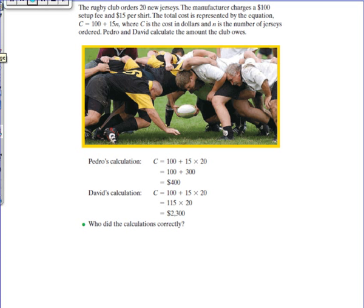Here's an example of why we need order of operations in math. The rugby club orders 20 new jerseys. The manufacturer charges a $100 setup fee and $15 per shirt. The total cost is represented by the equation C = 100 + 15 × N. You're multiplying 15 times N because they're charging you $15 per shirt.